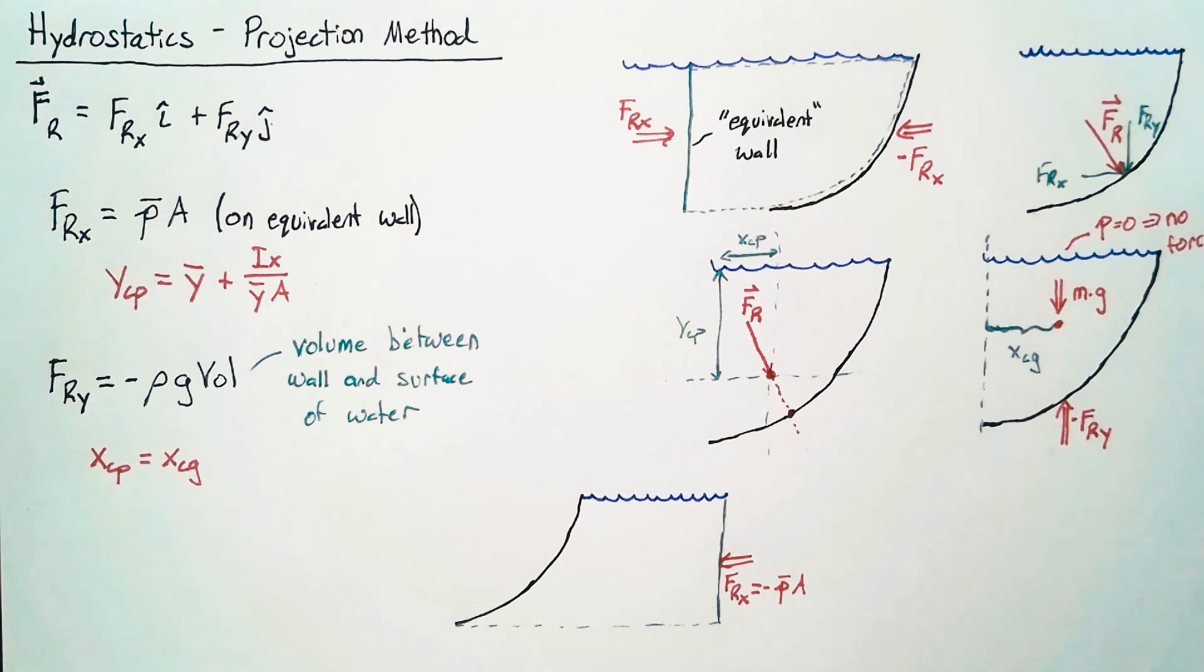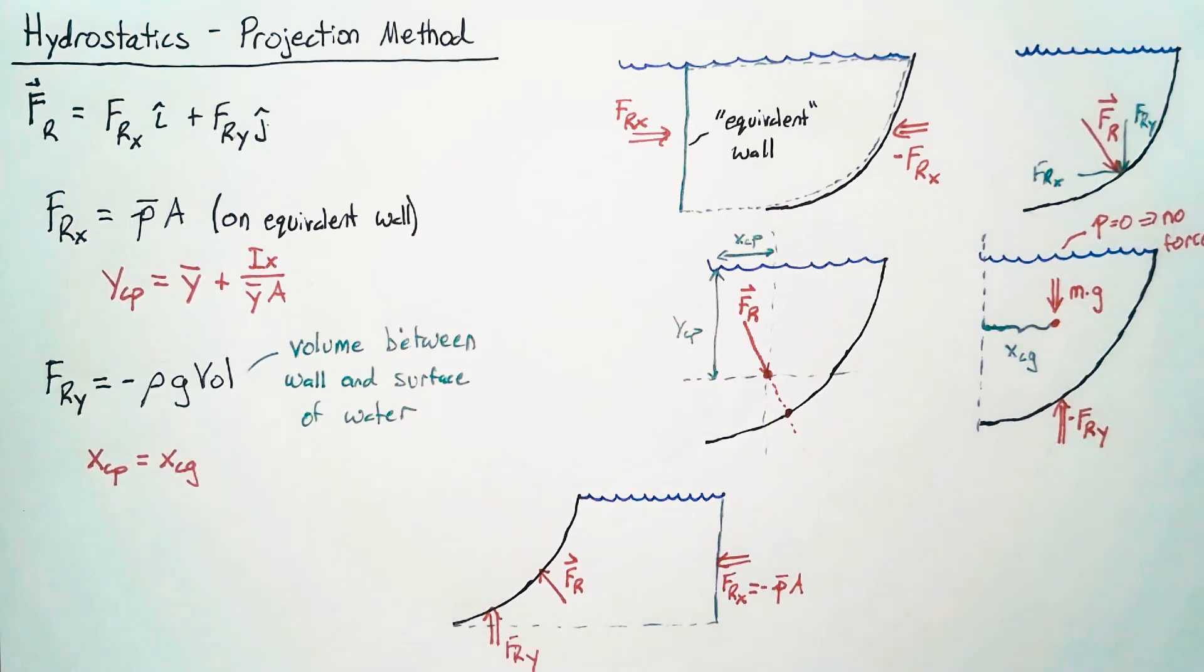Our y component should be pushing up, so our reaction force should look something like this. So how do we account for this force in the y direction? Well, it's tempting to use the volume of water. However, that's not what we have defined this volume as. This is the volume between the wall and the surface of the water.